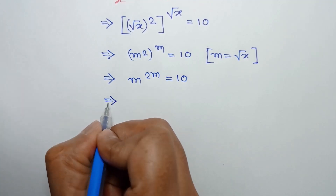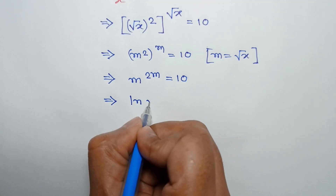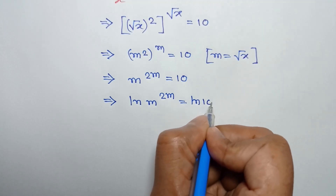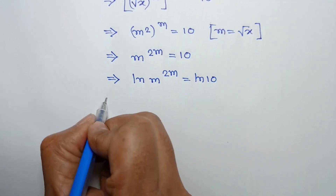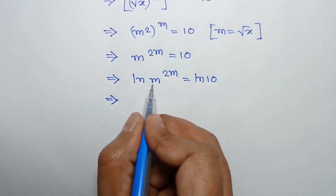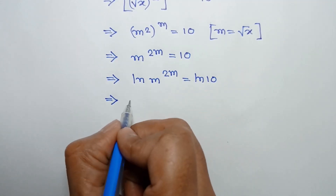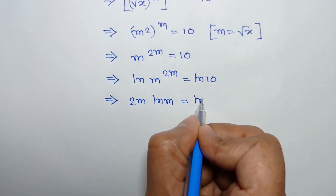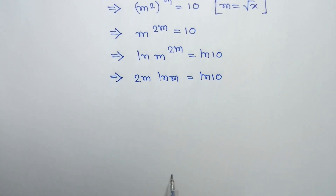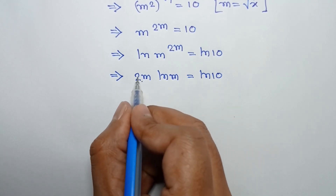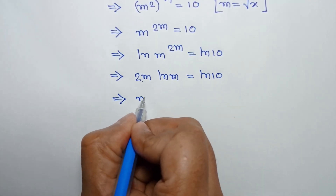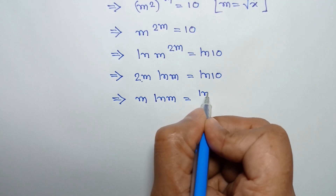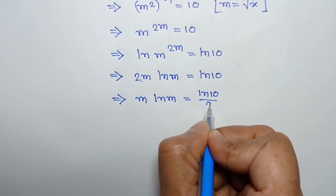Taking ln to both sides, we can write ln of m to the power twice m is equal to ln of 10. According to the law of logarithm, we can write this as twice m times ln of m is equal to ln of 10. Now, dividing both sides by 2, we can write m times ln of m is equal to ln of 10 over 2.